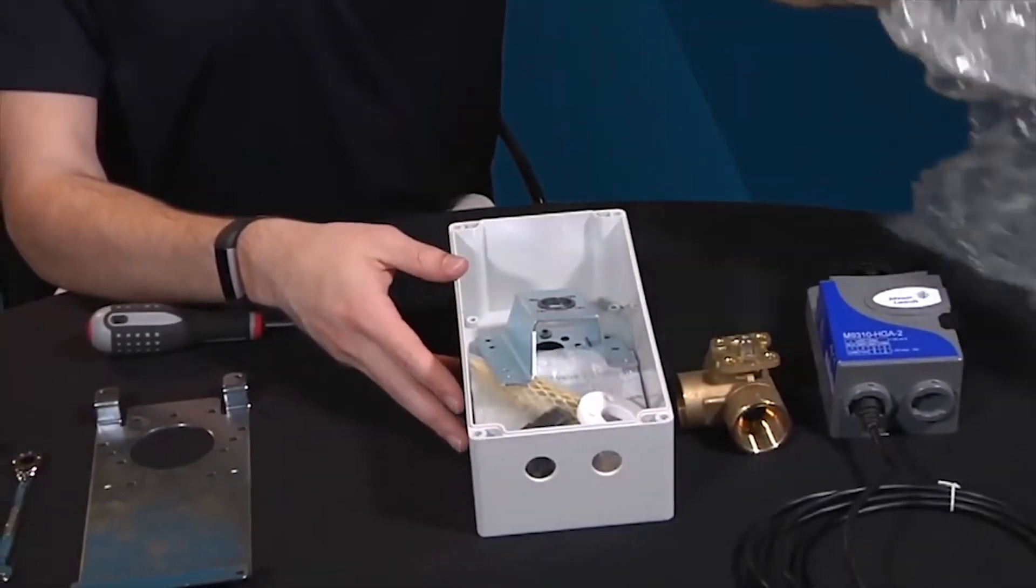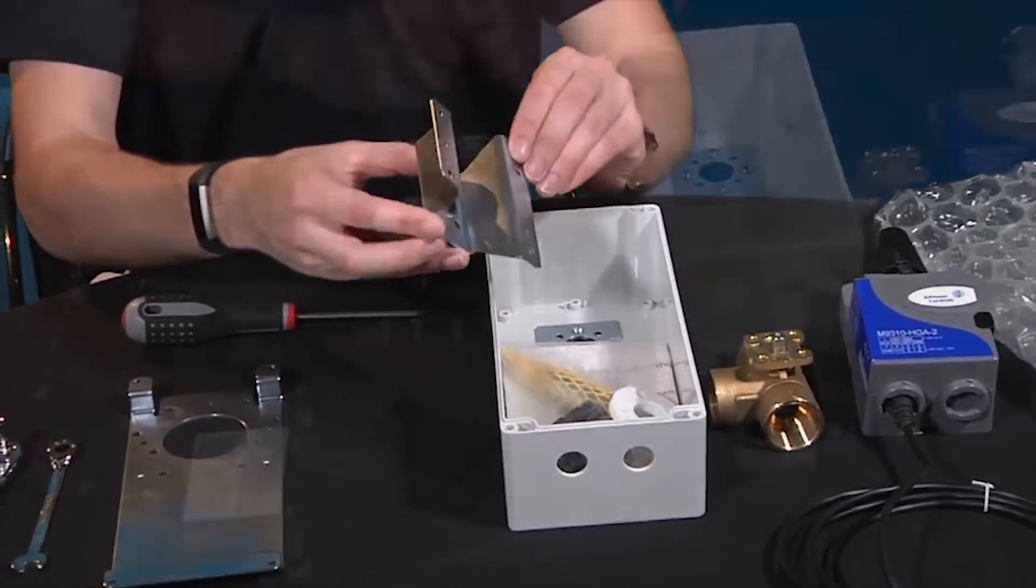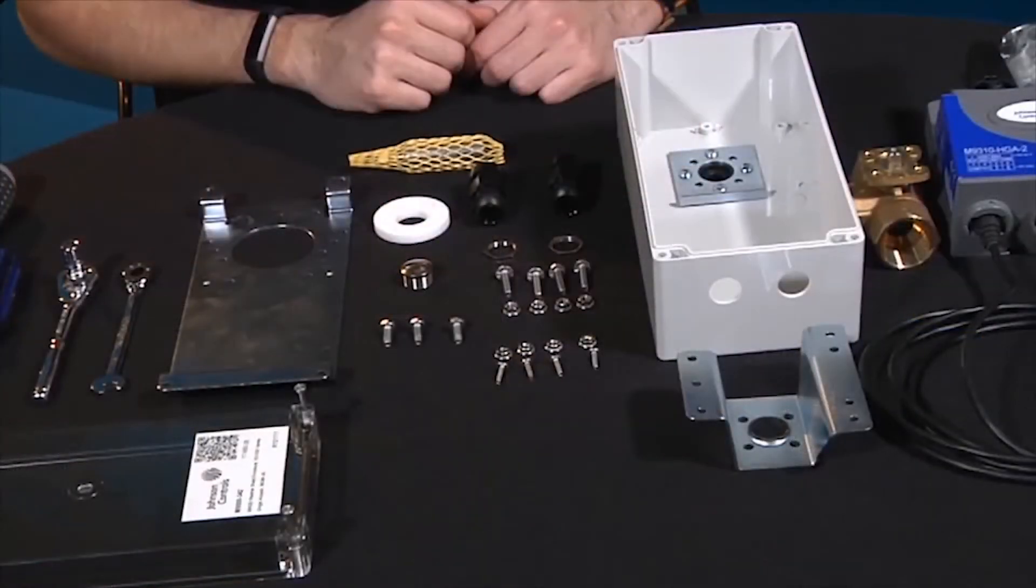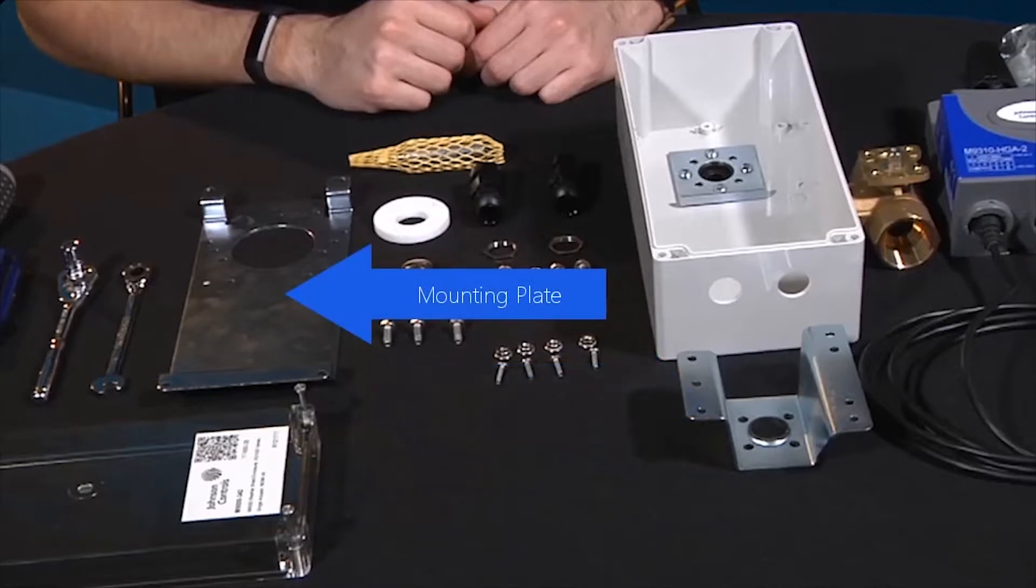Remove the packaging material from inside the enclosure. Unpack and inventory the kit. The M9000-342 weather shield enclosure kit contains the enclosure, the enclosure cover, the mounting bracket with bearing, and the mounting plates.